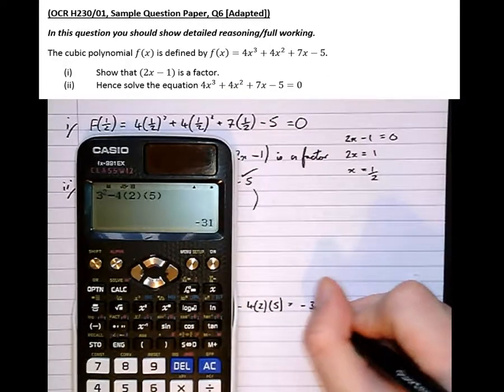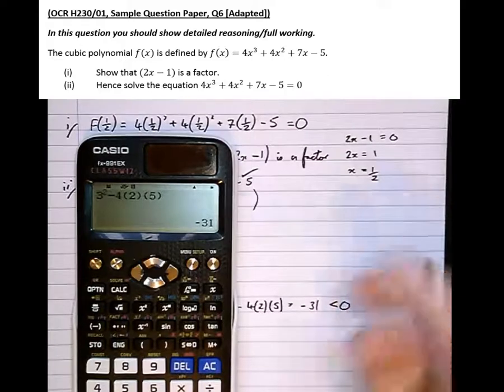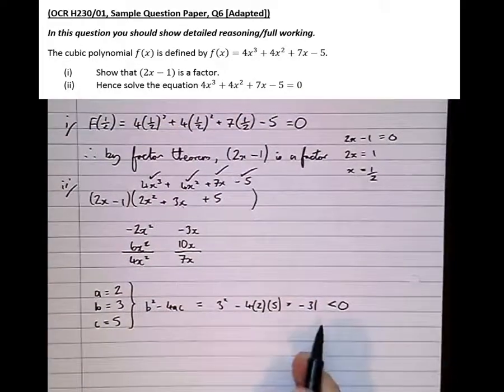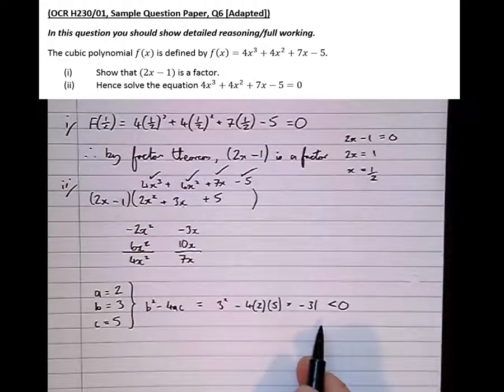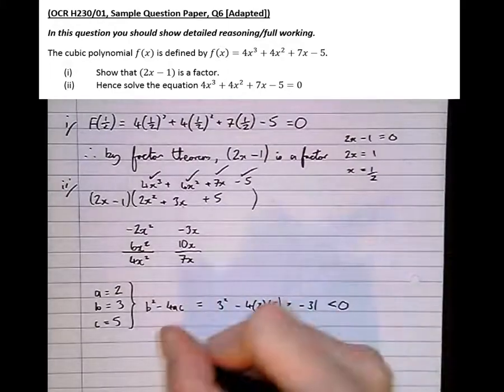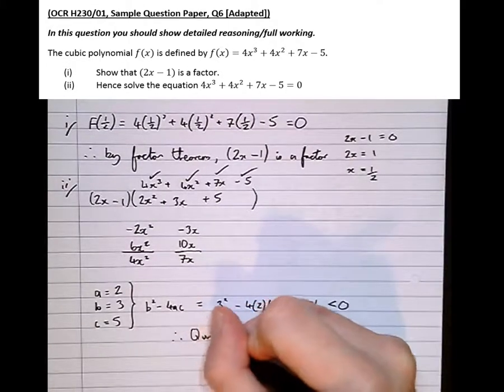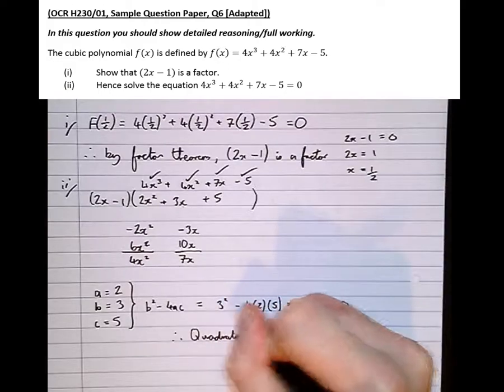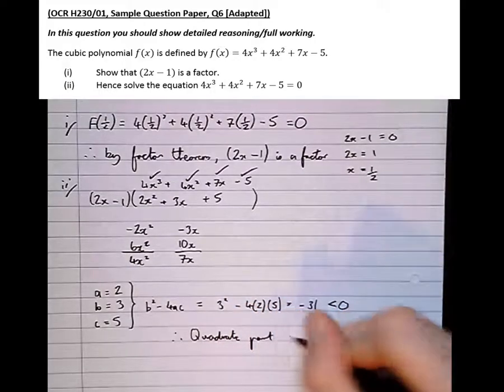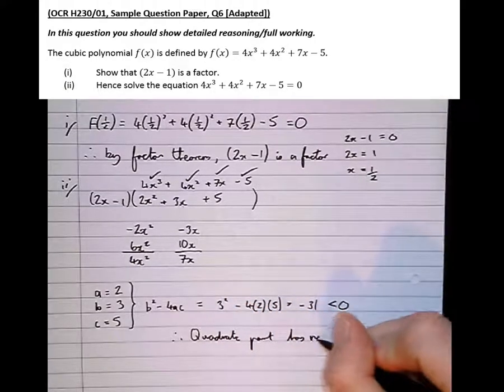Which is equal to minus 31, which is less than 0. It's always important to compare the discriminant to 0 when we're trying to show how many roots a quadratic equation has. Therefore, quadratic part has no real roots.